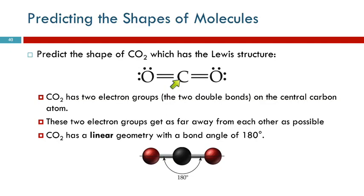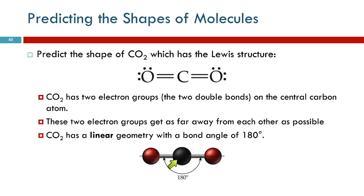They're going to try to get as far away from each other as possible. Think of carbon as the earth, and this is you, and this is your vile ex-significant other. You hate them. They're over here, so you're going to go to the other side of the planet — as far away as possible. You can't leave the planet. This group cannot leave the molecule, but it can be on the far opposite side of the carbon atom. Here's a molecular model: here's the carbon, here's one electron group, and here's the other electron group on the opposite side.